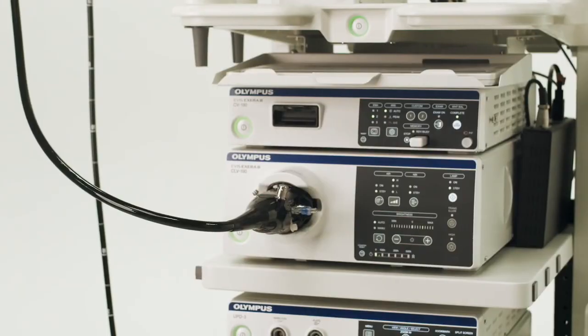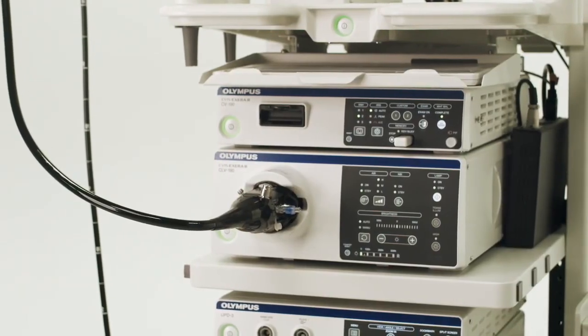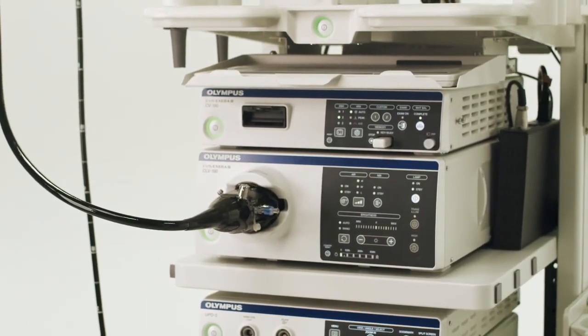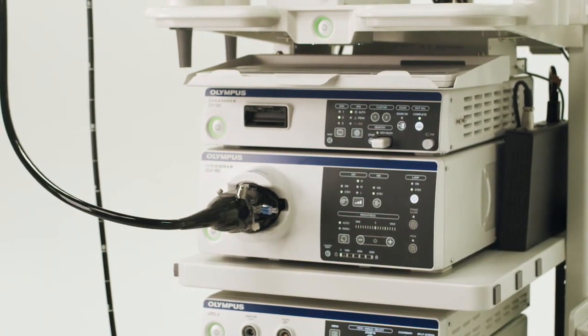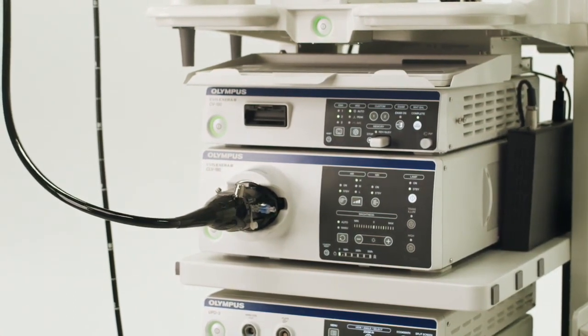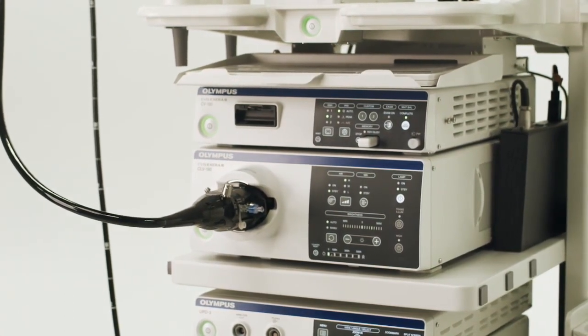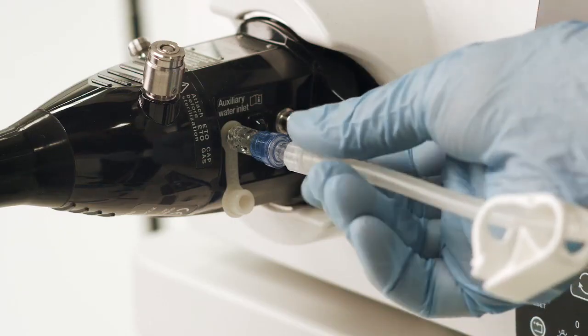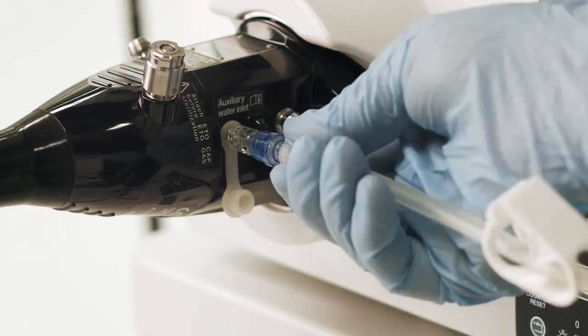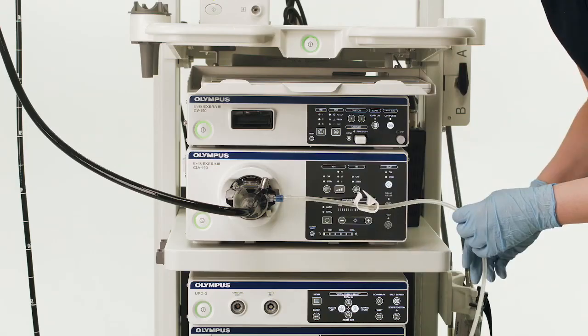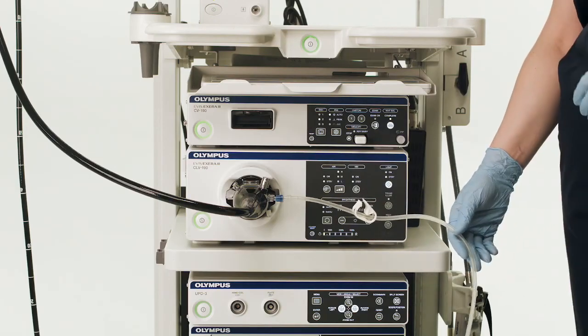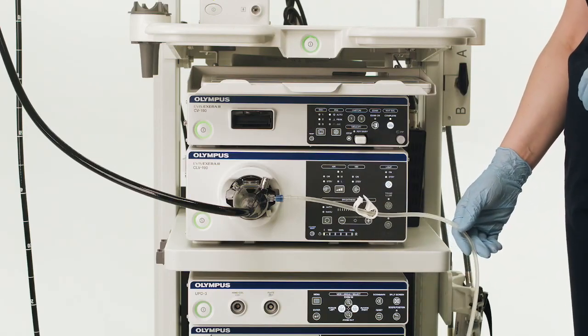This adapter will remain on the endoscope before, during, and after the procedure. The adapter should only be removed once the endoscope has reached the reprocessing location. Attach the MAJ 1651 tube set to the auxiliary channel adapter on the endoscope, turning one component onto the other ensuring a tight fit.